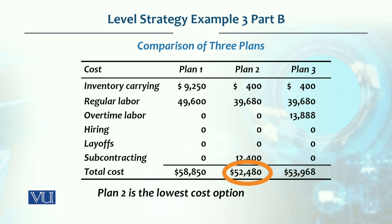However, if there is a quality issue with subcontracting, we need to reconsider. The cost difference between Plan 2 and Plan 3 is close to $1,500, so we could utilize overtime to meet demand instead. But overtime also carries a risk — productivity and quality can be affected if overtime is excessive. As far as cost is concerned, Plan 2 is the best option available for us.